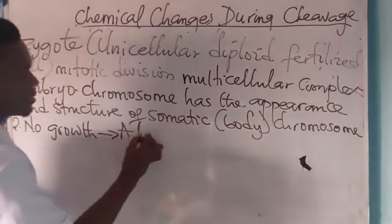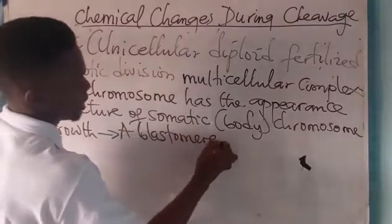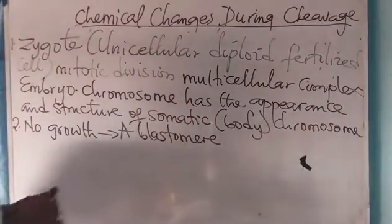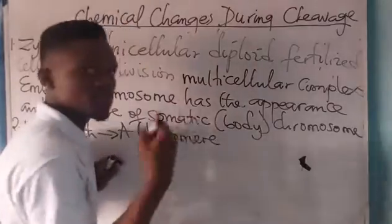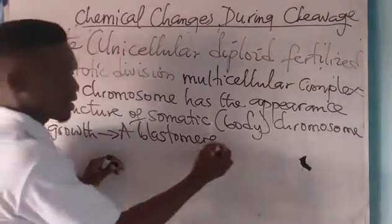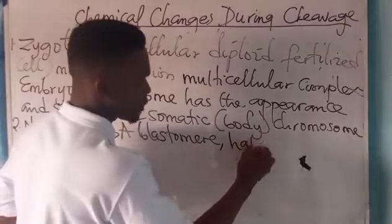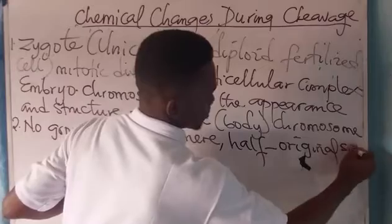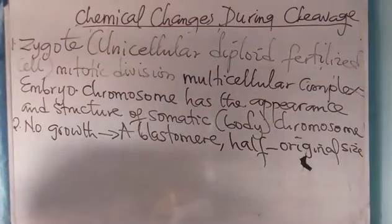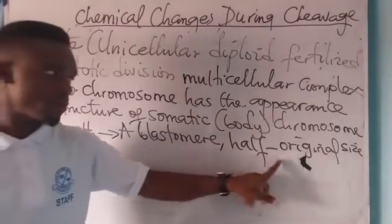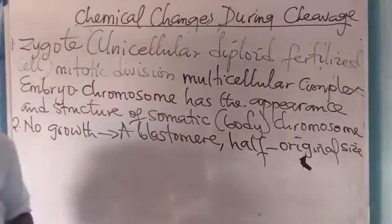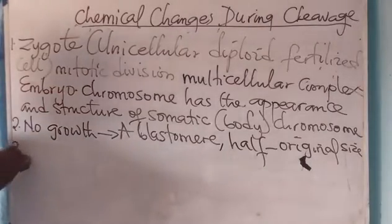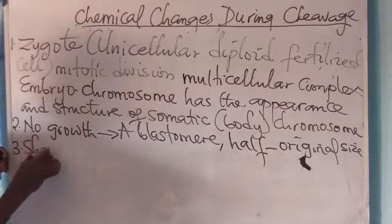Number two: there is no growth. This implies that a blastomere does not increase in size before the next period of division begins. However, it only becomes half its original size.